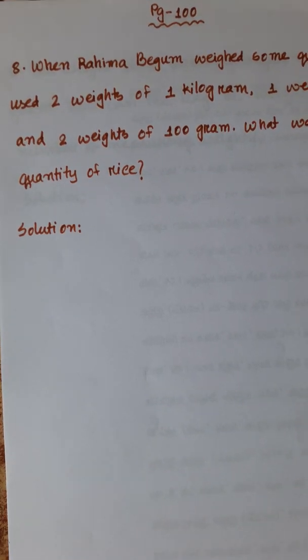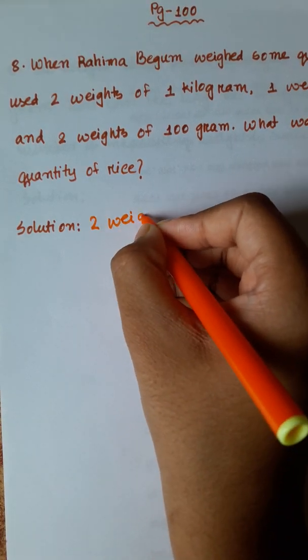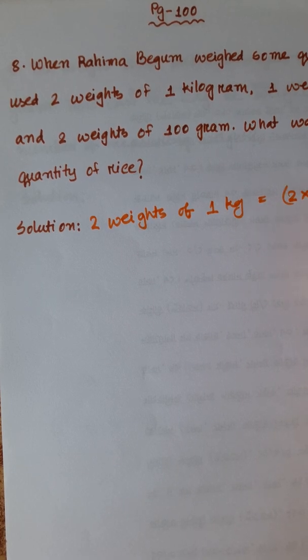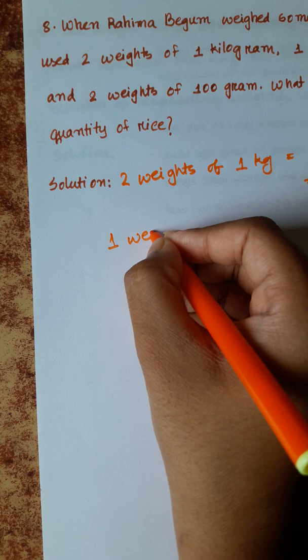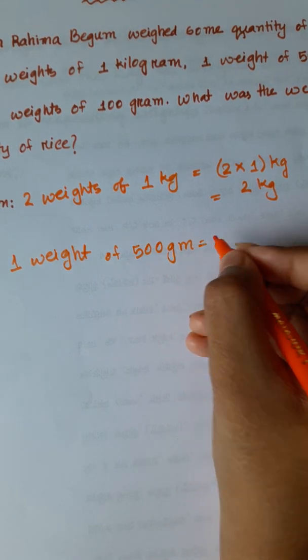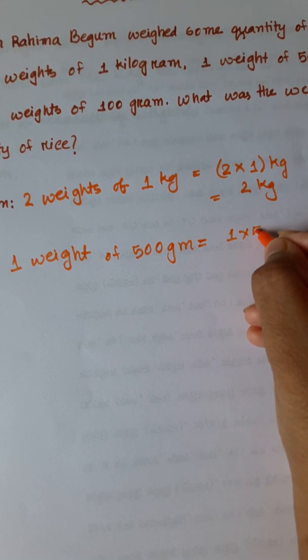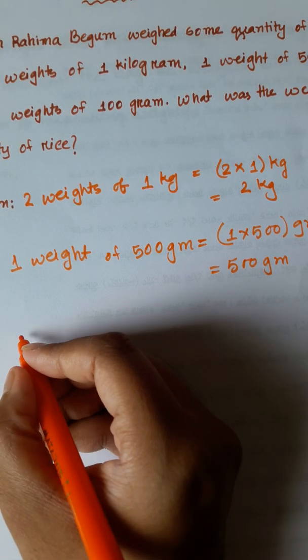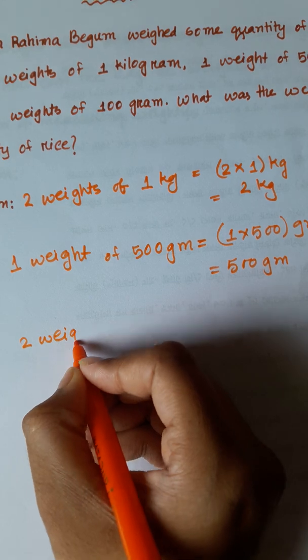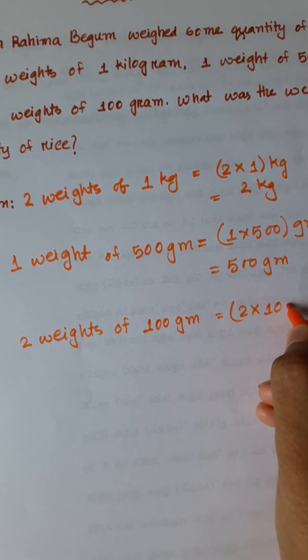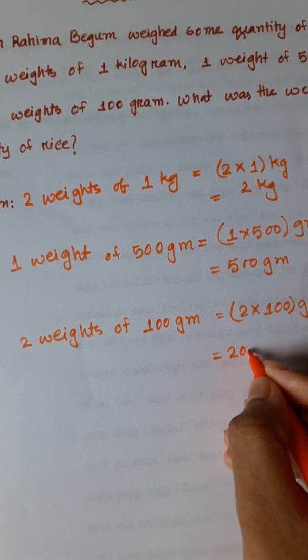So we can write, two weights of 1 kg is equal to 2 into 1 kg equals 2 kg. Then one weight of 500 gram, 1 into 500 gram equals 500 gram. Then two weights of 100 gram is equal to 2 into 100 gram equals 200 gram.